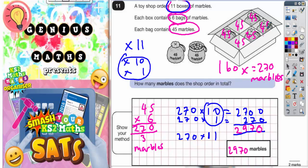Quick recap. This diagram will appear. We've got 6 bags and each bag is 45 marbles. So that's why we did 6 lots of 45, which equals 270 marbles. But then we want 11 of these boxes.